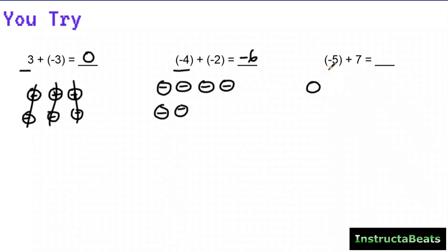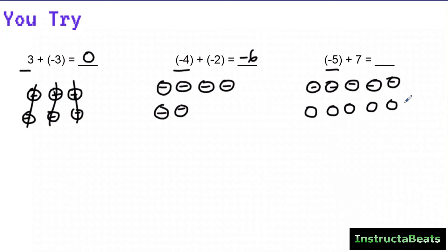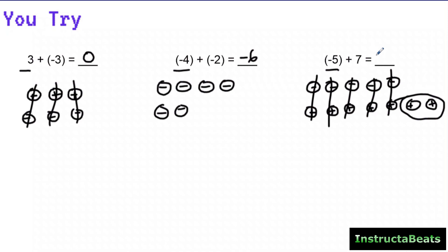My last one: I'm starting with five negative charges and I'm going to add seven positive charges to that — one, two, three, four, five, six, seven — putting a plus sign on all of those. Now I can cancel out: I can make five zero pairs and I have two positive charges left over. So negative five plus positive seven would be positive two.